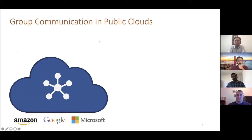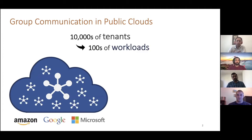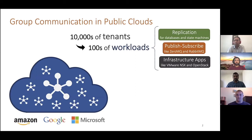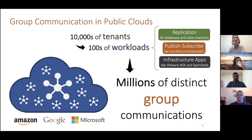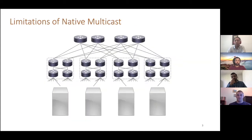Group communication is quite pervasive in public clouds today. Public clouds such as Amazon, Google, and Microsoft host tens of thousands of tenants, each running hundreds of workloads. These workloads range from replication for databases and state machines to publish-subscribe using technologies like ZeroMQ and RabbitMQ, and also infrastructure apps that companies like VMware NSX and OpenStack have built to allow overlay networks to run on top of the physical data center infrastructure.